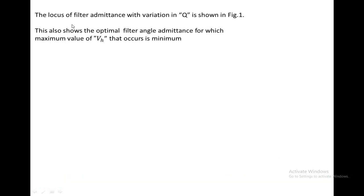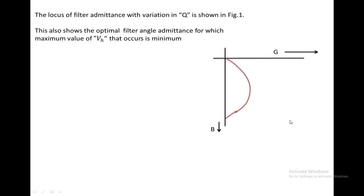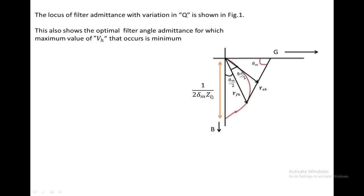In the first method, the locus of filter admittance with varying Q is shown in a figure. On the x-axis we have conductance G and on the y-axis we have susceptance B. By varying Q, the locus traces a semicircle. A line represents the filter admittance for harmonics, and from its tip another line represents the system harmonic admittance. The angle between them is theta_M, with theta_M/2 on each side. The maximum deviation is taken as (1/2)·delta_M·delta_0.